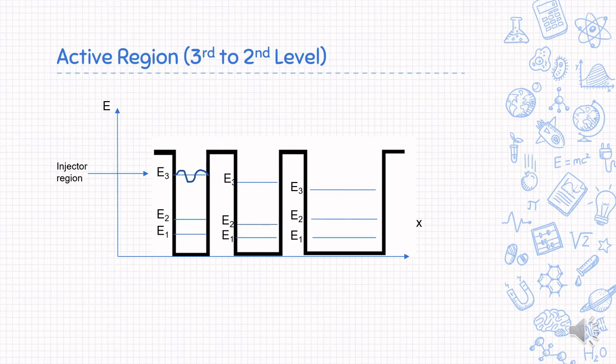First, the electron tunnels to the E3 in the second well, then spontaneously relaxes to E2 due to its unstable condition, releasing a photon corresponding to the energy difference. Or the second way, the electron can first relax from E3 to E2, releasing photon first, then tunnel to the second well. It doesn't matter which path the electron goes through. The same photons are being emitted.